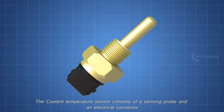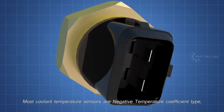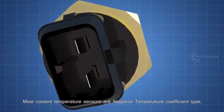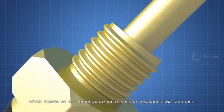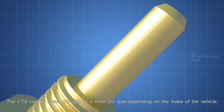The data is also used to control the radiator fan and to update the temperature gauge on the driver console. The coolant temperature sensor consists of a sensing probe and an electrical connector. Most coolant temperature sensors are negative temperature coefficient type, which means as the temperature increases, the resistance will decrease. The CTS can be a 2 pin type or a 3 pin type, depending on the make of the vehicle.